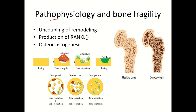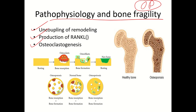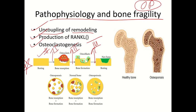Coming to pathophysiology of bone fragility in osteoporosis, there are three mechanisms: first, uncoupling of remodeling; second, production of RANKL; third, osteoclastogenesis. For uncoupling of remodeling: in the remodeling cycle, the first phase is osteoclast activity, the second phase is osteoblast activity, and the third phase is formation of new bone after mineralization.